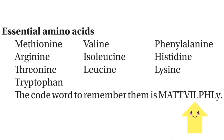The remaining essential amino acids include phenylalanine and lysine. Is ko easily remember karne ke liye hum ek code use kar sakte hain, and that code is MATT WILL FLY — matt ka mat mat hain, become M for methionine, A for arginine, T for threonine, T for tryptophan, likewise W for valine and so on. So this is an easy way to remember essential amino acids.